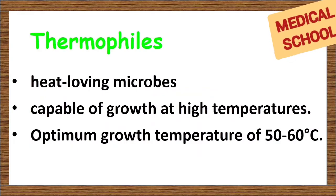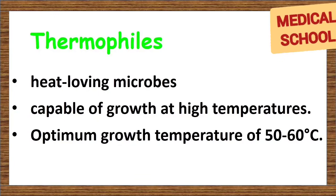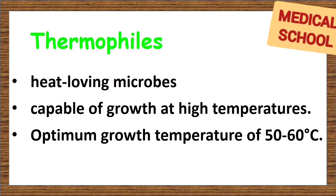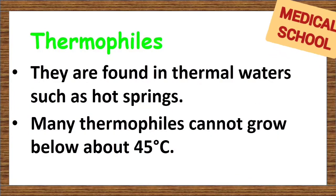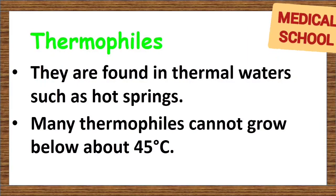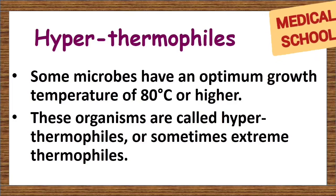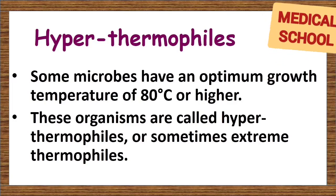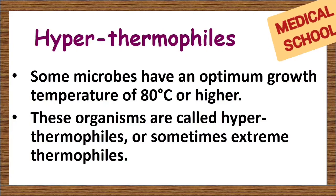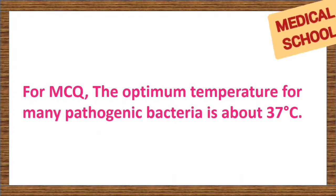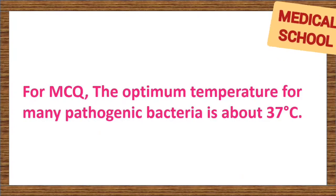Thermophiles are heat-loving microbes capable of growing at high temperatures, with many having an optimum growth temperature of 50–60°C. They are found in thermal waters such as hot springs. Many thermophiles cannot grow below about 45°C. Hyperthermophiles, sometimes called extreme thermophiles, have an optimum growth temperature of 80°C or higher. The optimum temperature for many pathogenic bacteria is about 37°C.